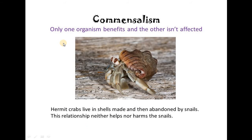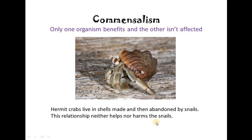In commensalism, only one organism gets benefit and the other is not affected. An example is the hermit crab, which lives in shells made and then abandoned by snails. This relationship neither helps nor harms the snail.